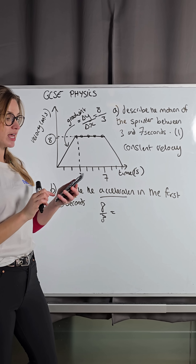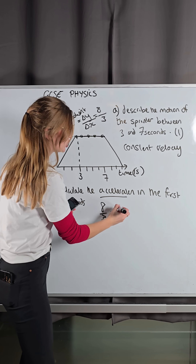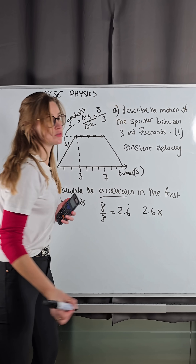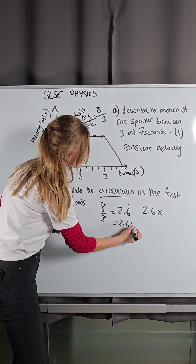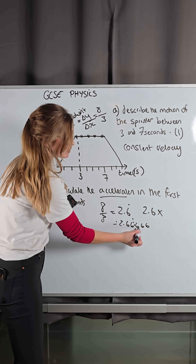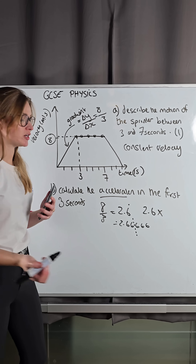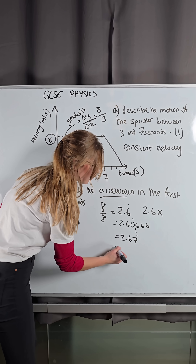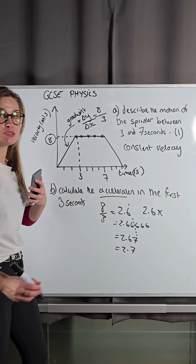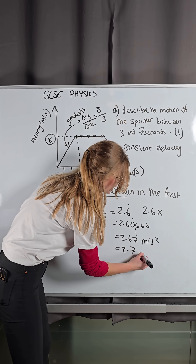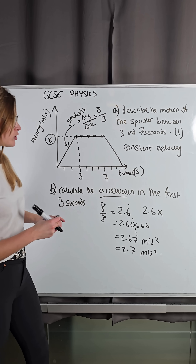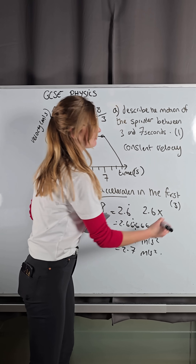So we do 8 divided by 3, the change in vertical divided by the change in horizontal. We get 2.6 recurring. Be careful — if you write 2.6, that is wrong, because it's 2.6666... a recurring number. You round it: since the digit is 6, which is 5 or greater, you round up to 2.67, or you could write 2.7 — either will get you full marks. And remember, the units for acceleration are always meters per second squared — don't forget that squared. This would have been a 3-mark question, making it a 4-mark question overall.